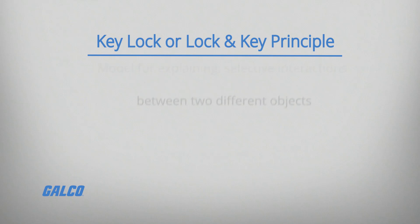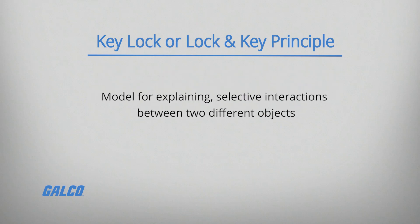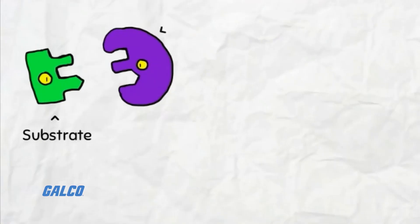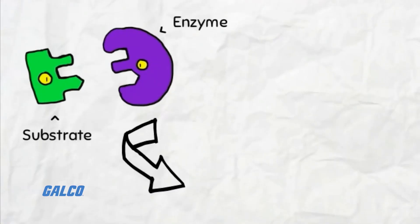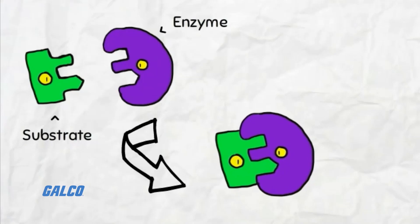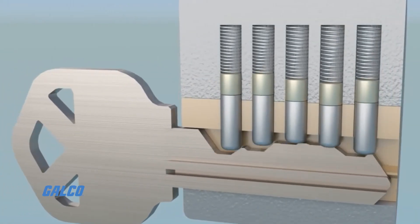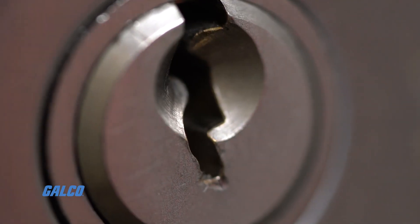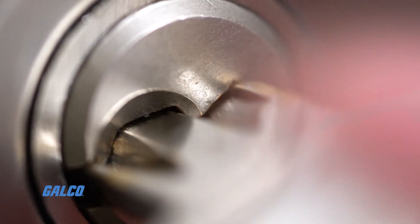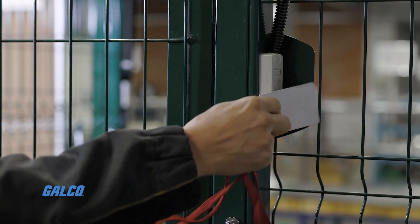The key-lock, or locking key, principle is a model for explaining selective interactions between two different objects. Whether discussing enzymes in biology or neurotransmitters in psychology, the key-lock principle explains why only certain objects will fit together — in the same way that a key must have a certain shape to fit a lock.